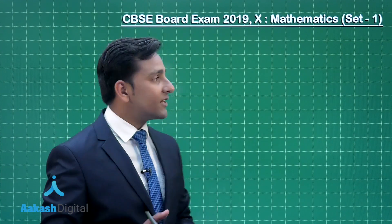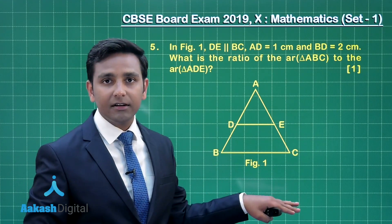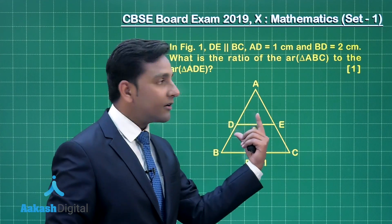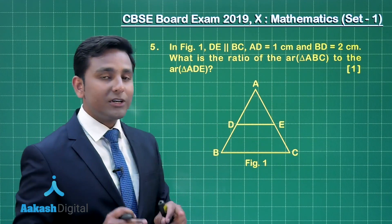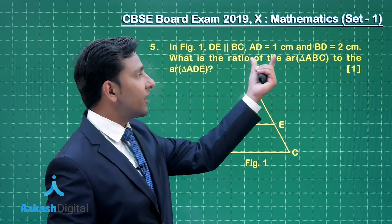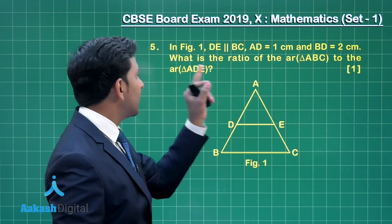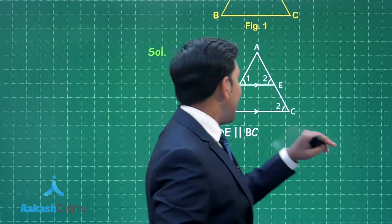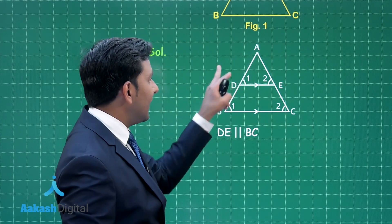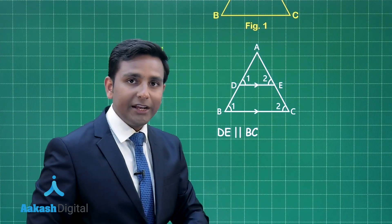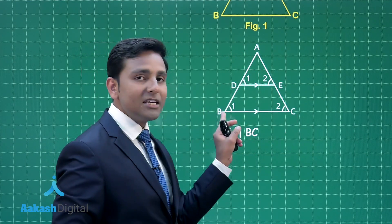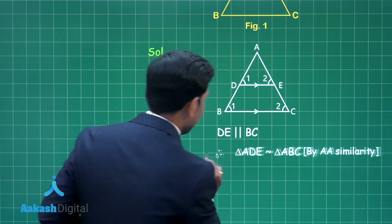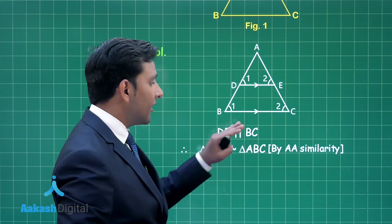Now let us discuss question number 5. This question is from the chapter Triangles. The question states: in figure 1, DE is parallel to BC, AD = 1 cm, and BD = 2 cm. What is the ratio of the area of triangle ABC to the area of triangle ADE? Since DE is parallel to BC, angle ADE = angle ABC and angle AED = angle ACB — both pairs are corresponding angles — so triangle ADE is similar to triangle ABC by the AA similarity criterion.